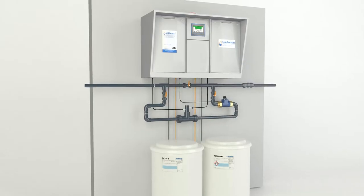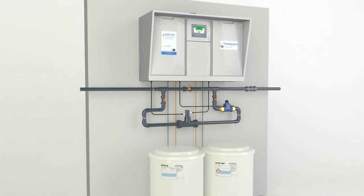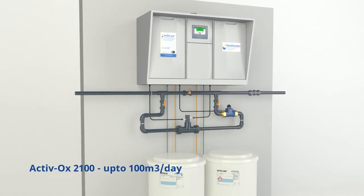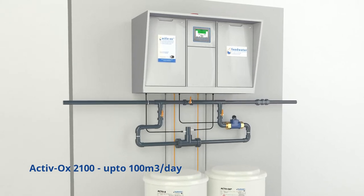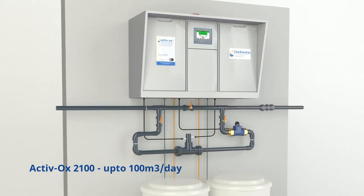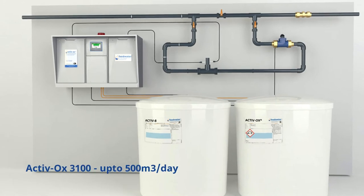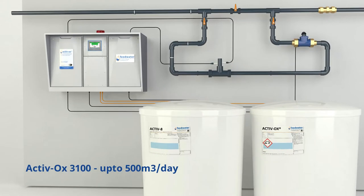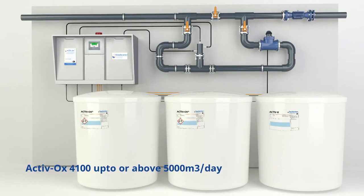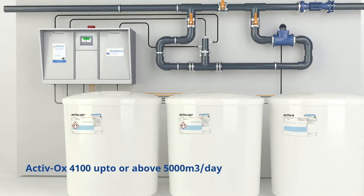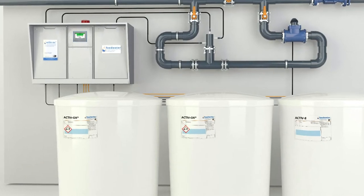The Activox system comes in three different models. The Activox 2100 Eco dosing system is designed for smaller applications treating from a few litres up to 100 cubic metres per day. For larger applications, the Activox 3100 Pro and Activox 4100 Multi have been engineered to treat applications up to or even exceeding 5,000 cubic metres of water per day.